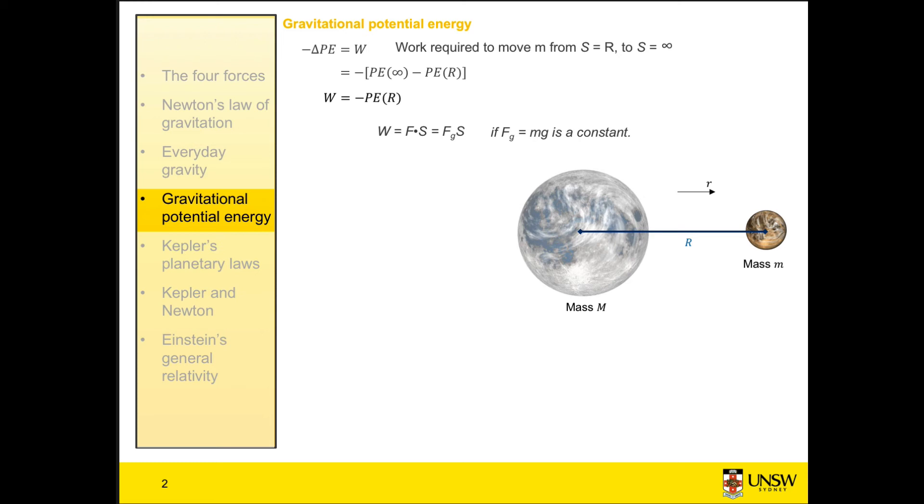We'll do our usual trick. We look at the work done over a very small displacement ds over which we can assume that the force is constant. And then the work done over that small displacement ds is equal to F times ds.